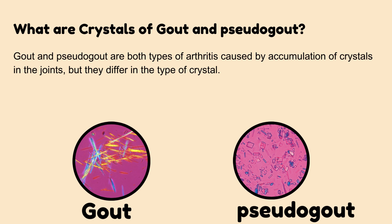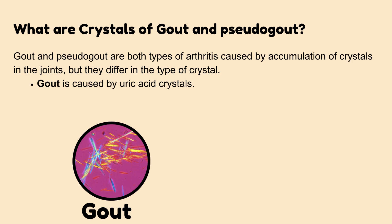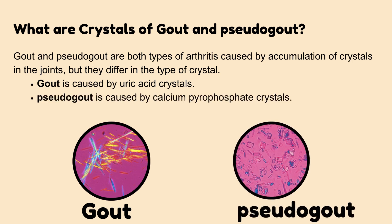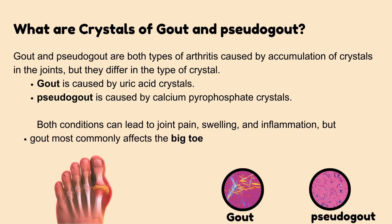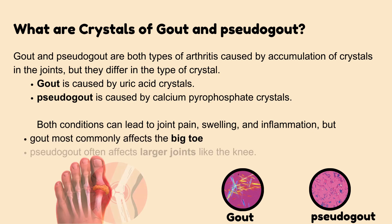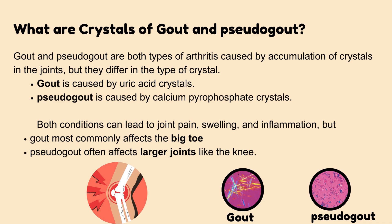Gout and pseudogout are both types of arthritis caused by the accumulation of crystals in the joints, but they differ in the type of crystal. Gout is caused by uric acid crystals, while pseudogout results from calcium pyrophosphate crystals. Both can lead to joint pain, swelling, and inflammation. However, gout typically affects the big toe, whereas pseudogout more commonly impacts larger joints like the knee.